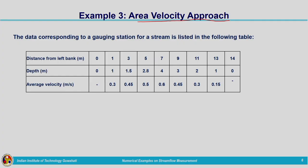In the previous question, velocities at two different depths were given and we computed the average velocity. Here that task is not needed — average velocity is already available. The issue is with cross-sectional area: this is a non-prismatic channel, which you can understand from the depth dimensions. We need to compute the area accurately. Once cross-sectional area and velocity are known, computing discharge is straightforward. We need to compute the area first, then compute the discharge.